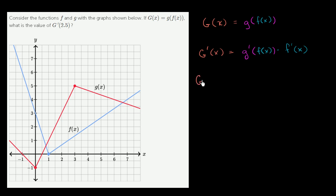G prime of 2.5 is going to be equal to lowercase g prime of f of 2.5, f of 2.5 times f prime of 2.5.